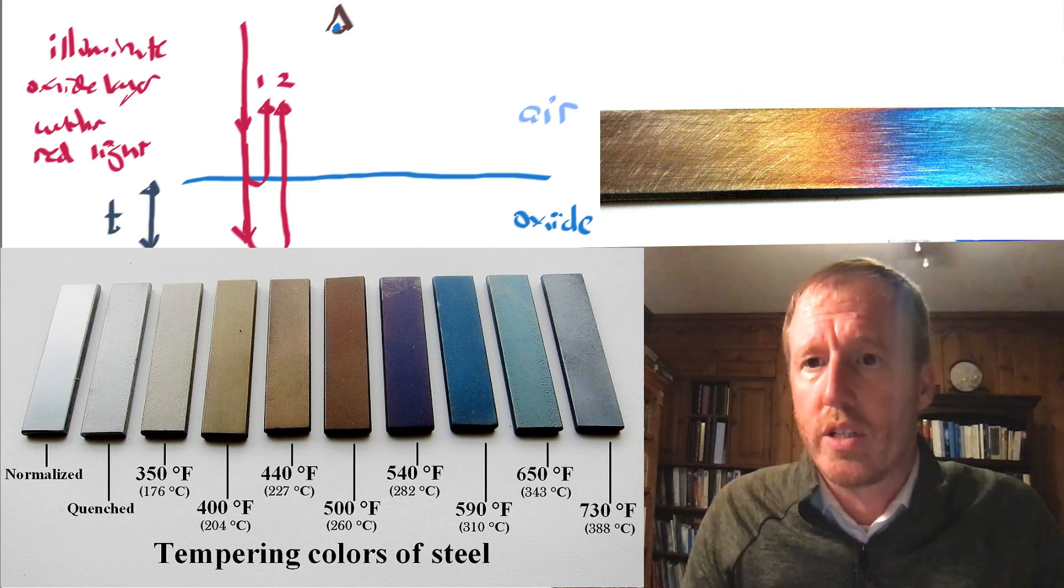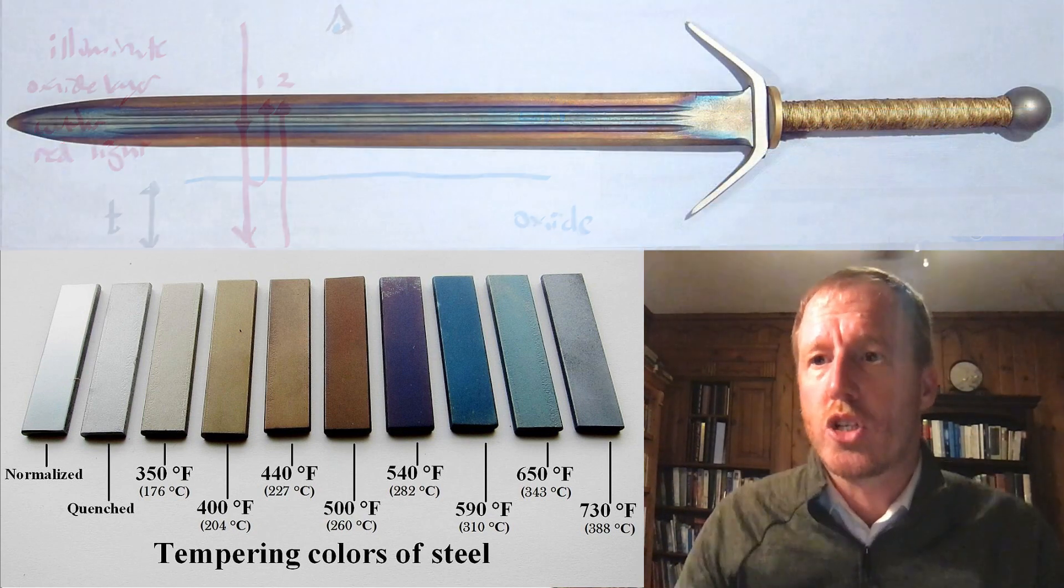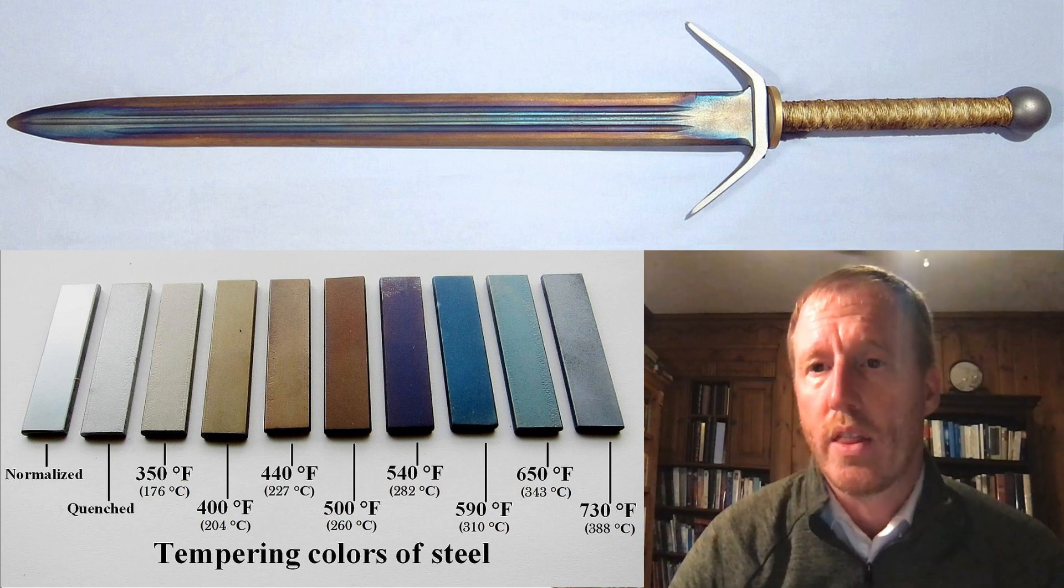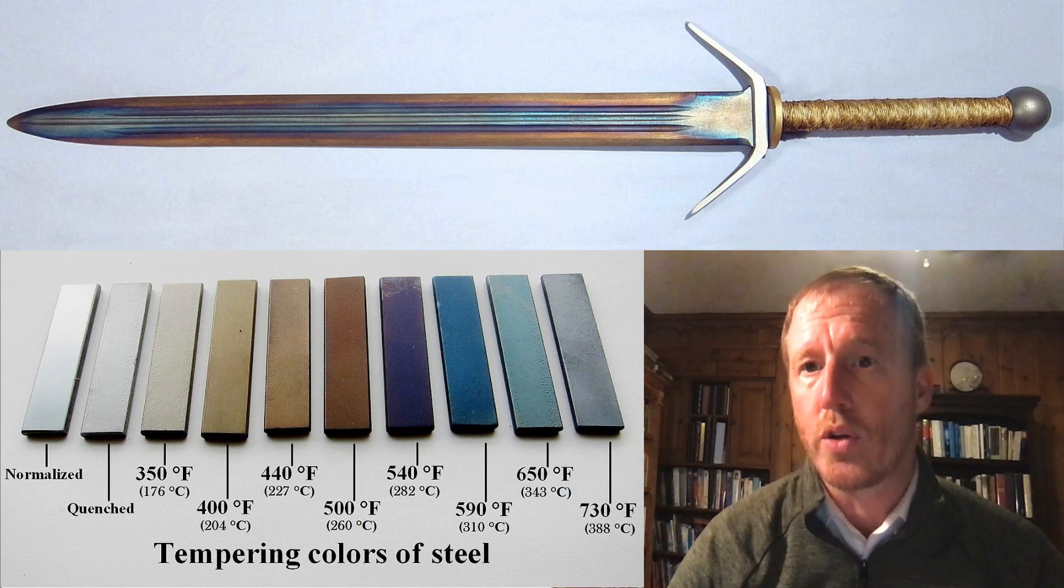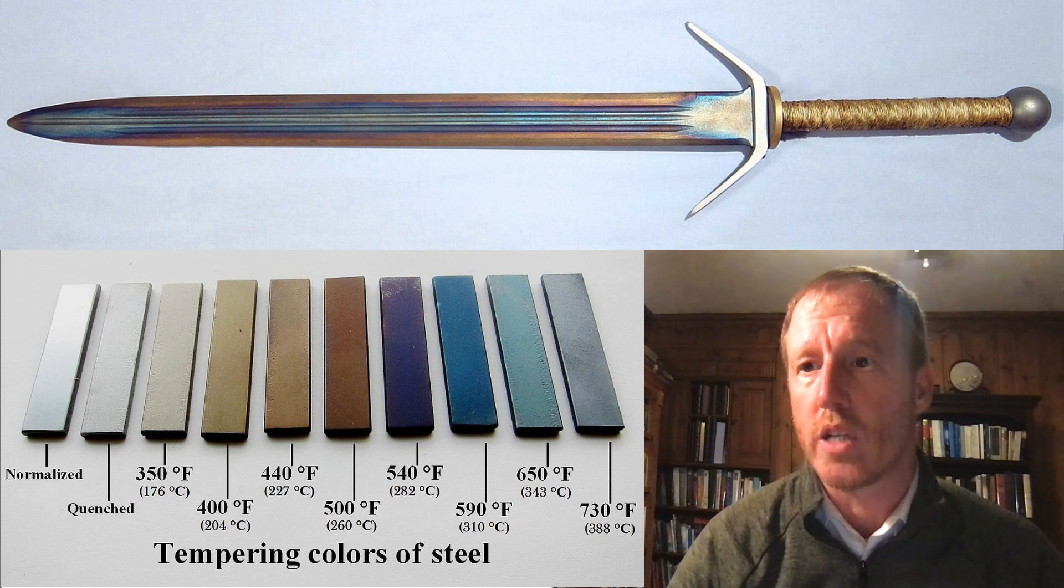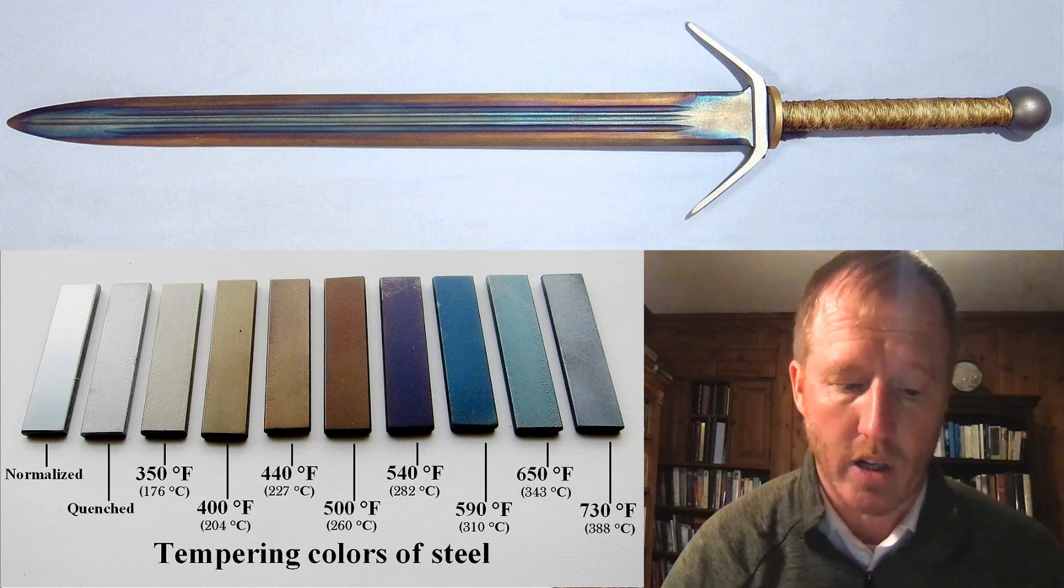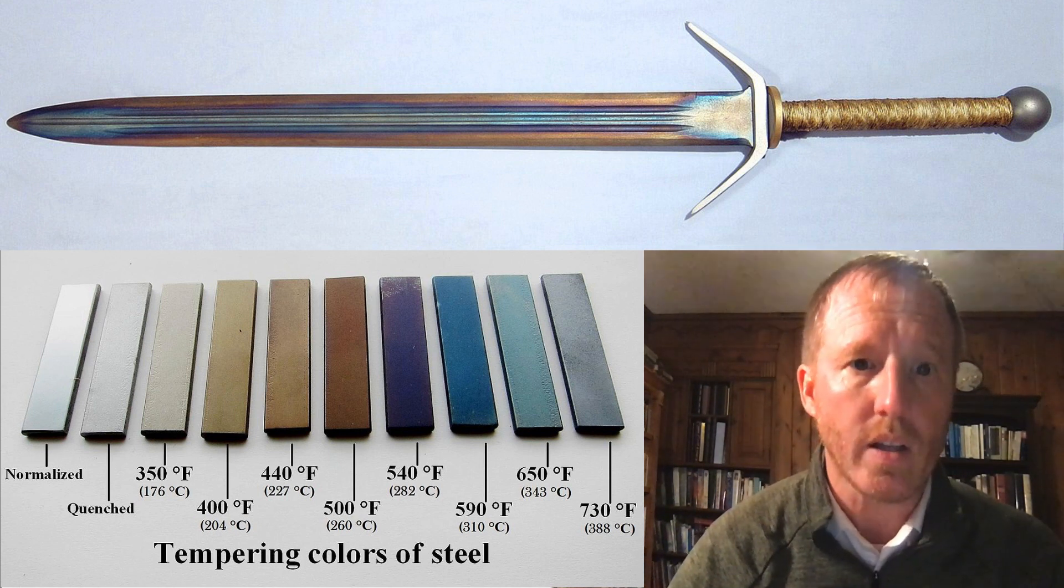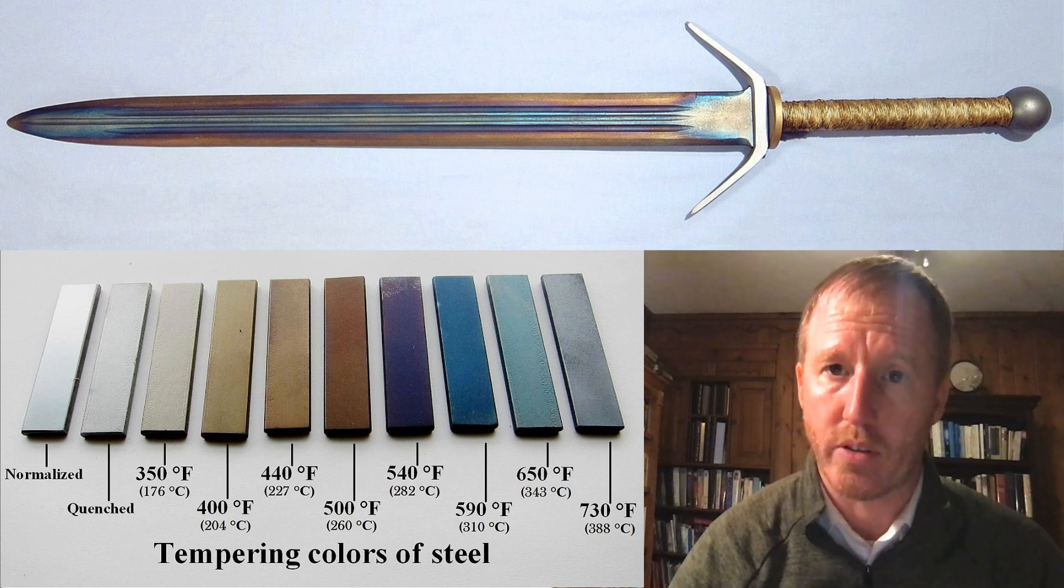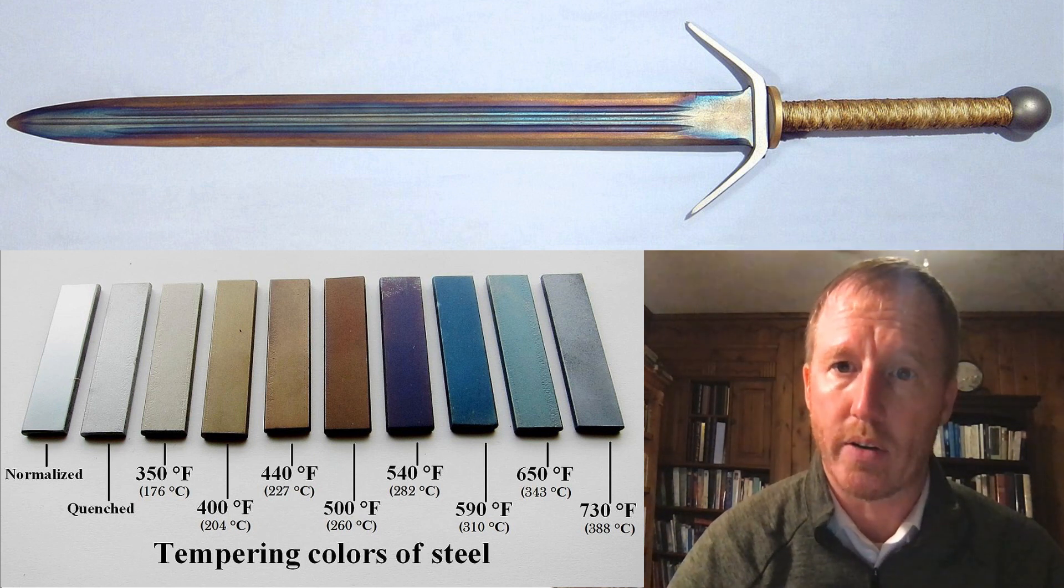And also, as a neat side note, I show here a picture of a sword that has been differentially heated, so different regions of it were heated to different temperatures. And as a result, the steel appears to be different colors because of different thicknesses of oxide layer at different locations. That is one of the first experiments that Young is talking about here.